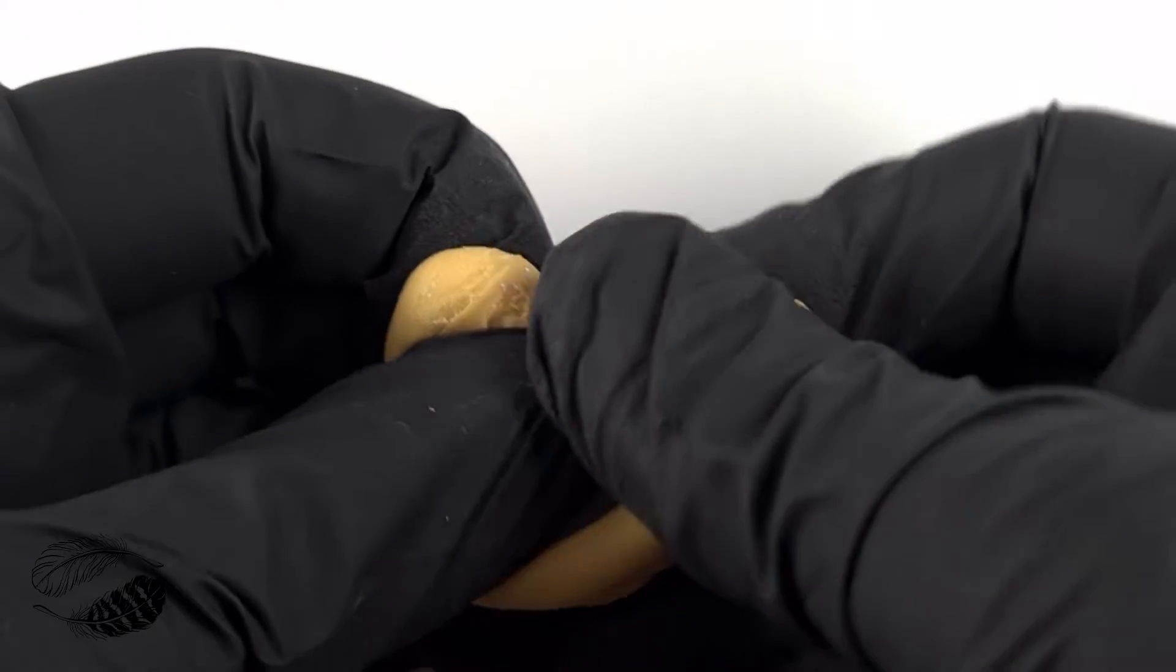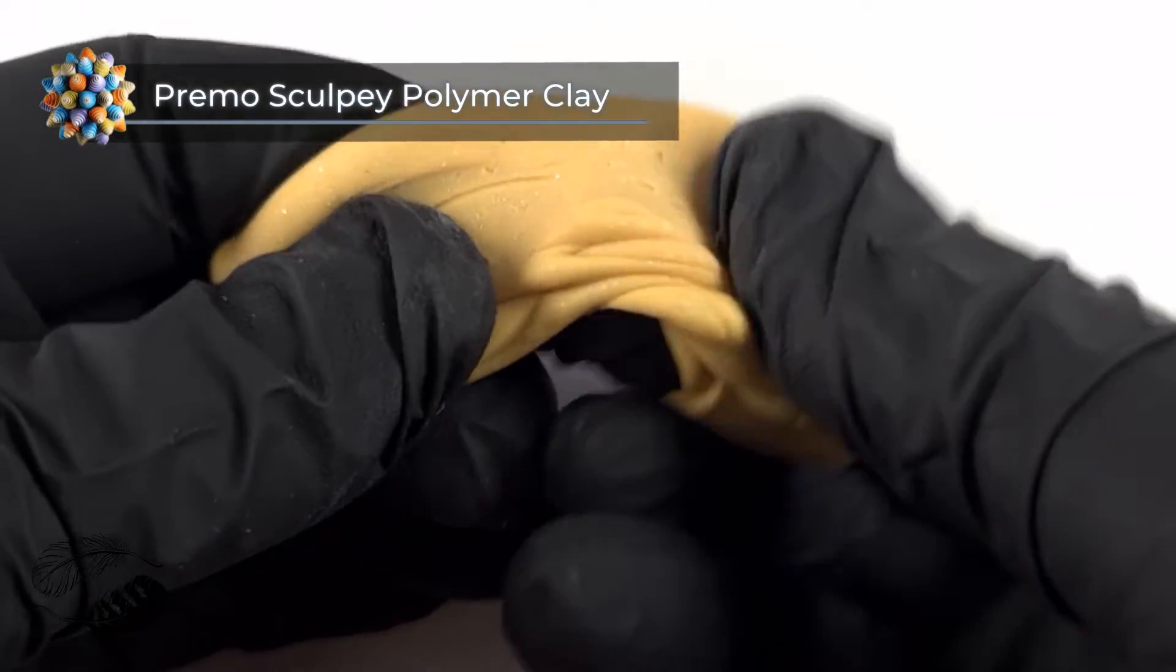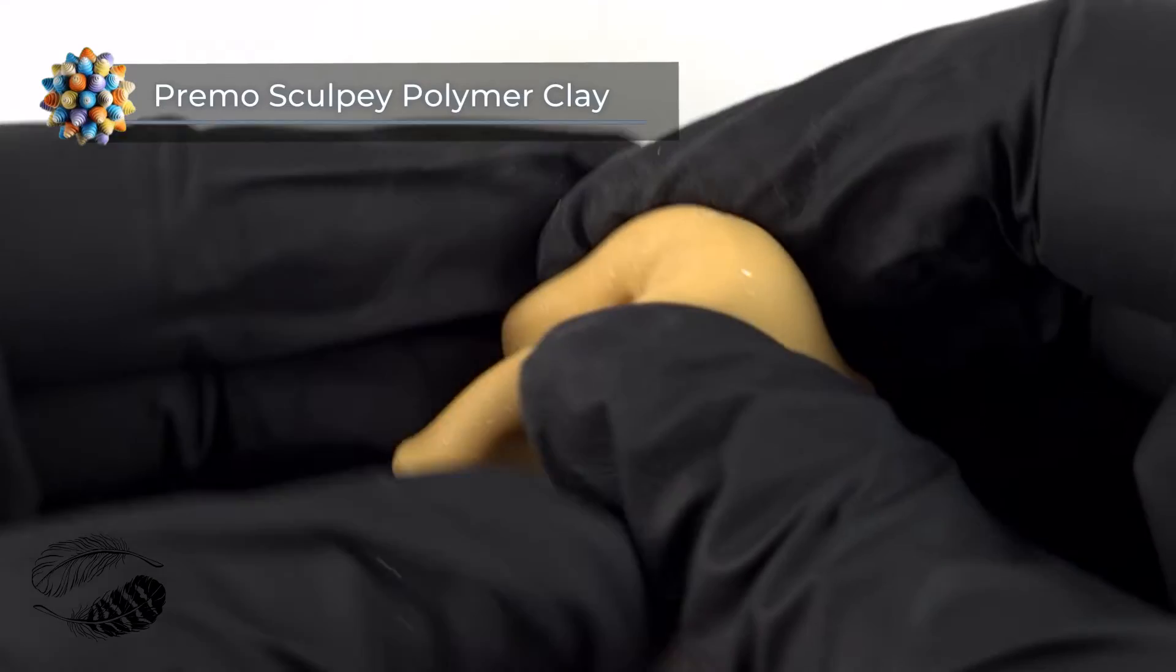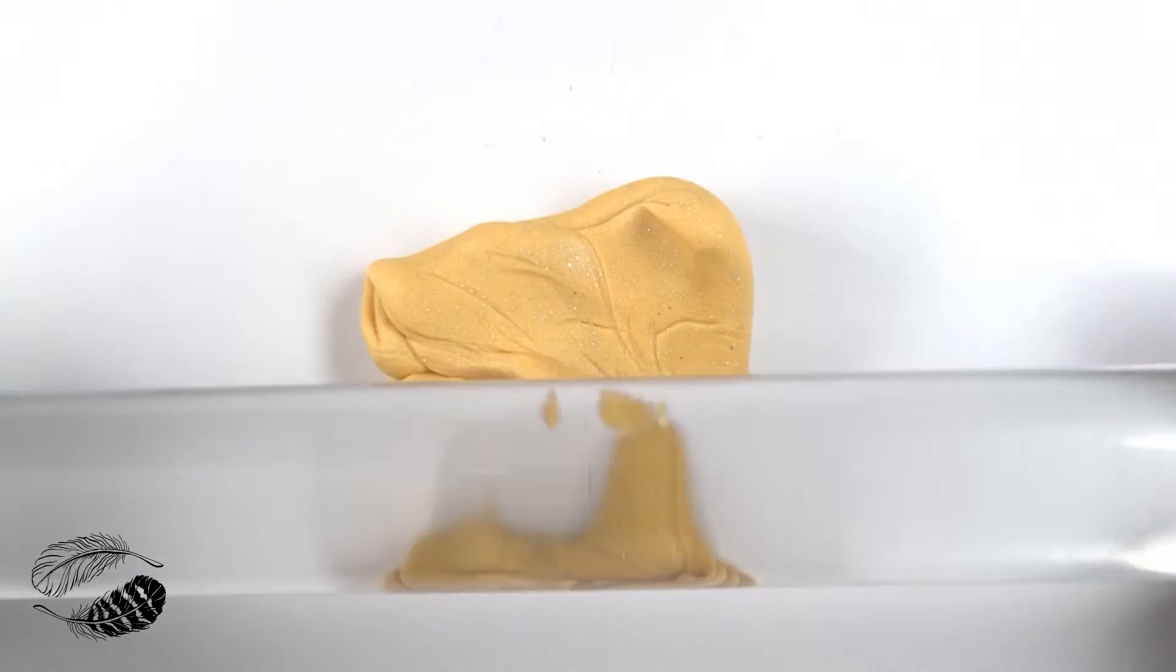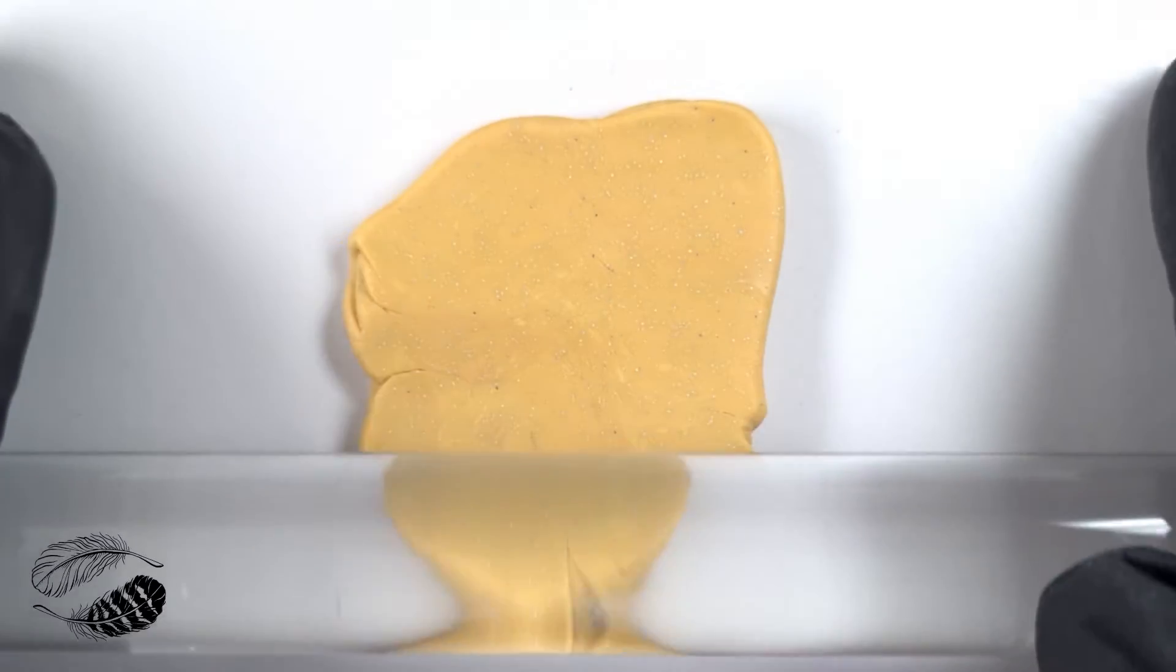Here I've got some yellow Primo Sculpey polymer clay that is really really sticky and soft, and the reason why I wanted to use this is just to show you that you can still roll clay even when it's in this condition.